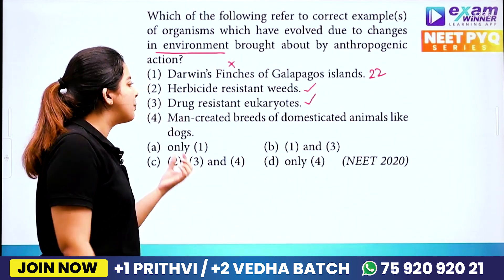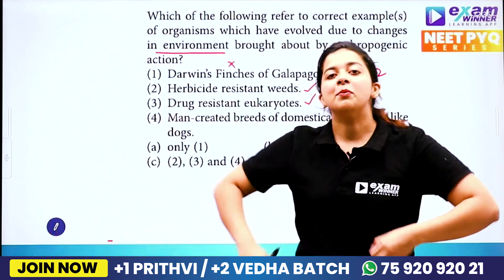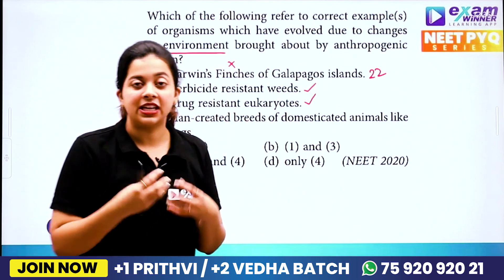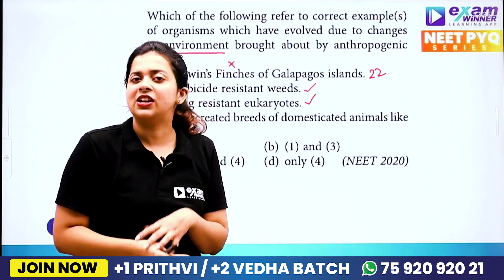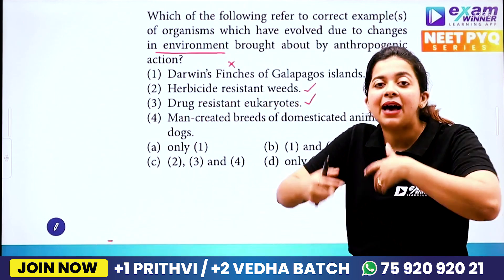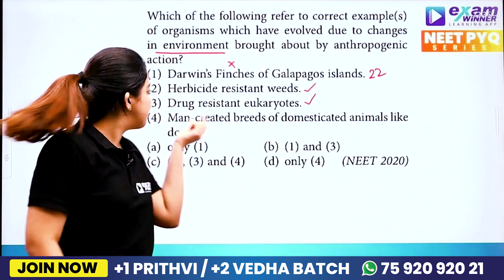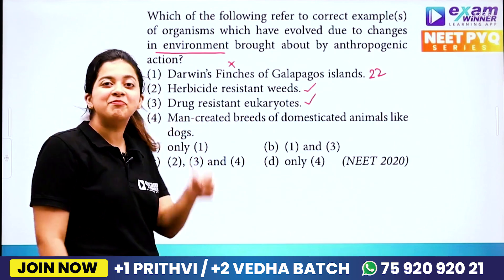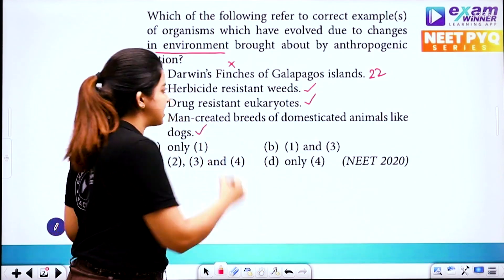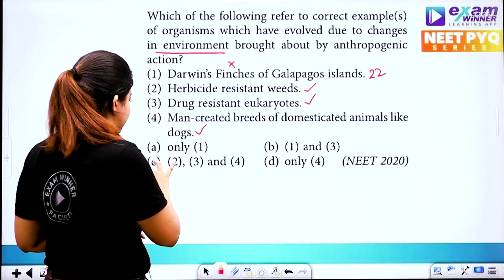Then, man-created breeds of domesticated animals, like dogs. When we create breeds, we use genes and variations to develop any breed. Man-created breeds are anthropogenic. So this is correct. The answer options are 2, 3, and 4 — that is option C.